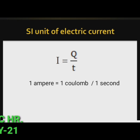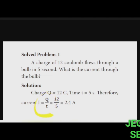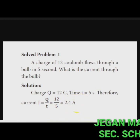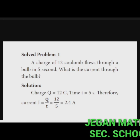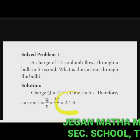Solved problem: A charge of 12 Coulombs flows through a bulb in 5 seconds. What is the current through the bulb? Given: charge Q = 12 Coulombs, time T = 5 seconds. We need to find I. Using the formula I = Q / T, we get I = 12 / 5 = 2.4 Ampere. So the current through the bulb is 2.4 A.